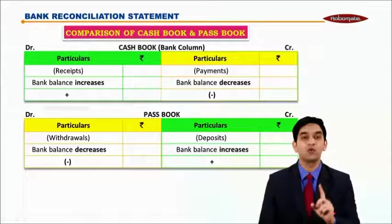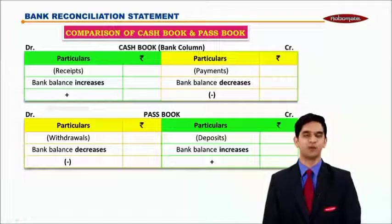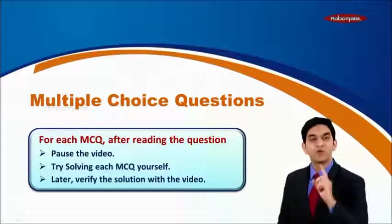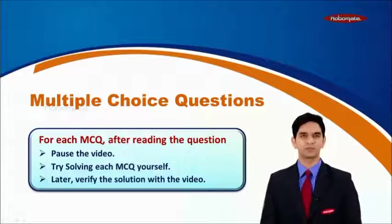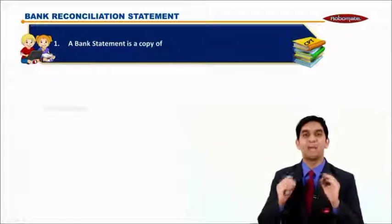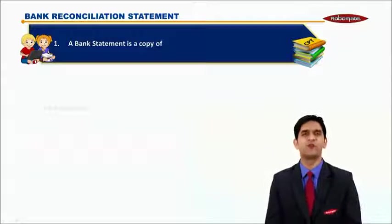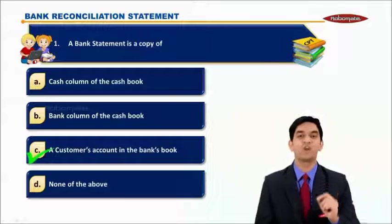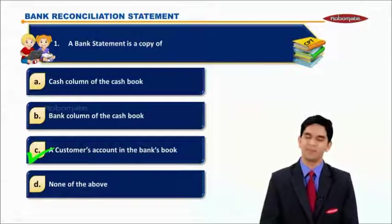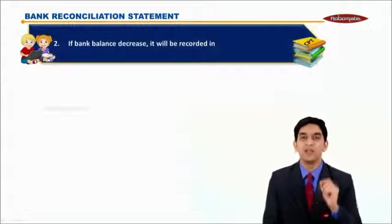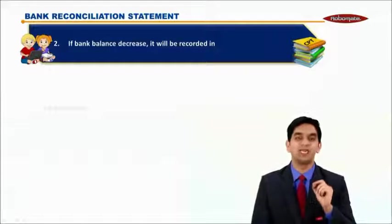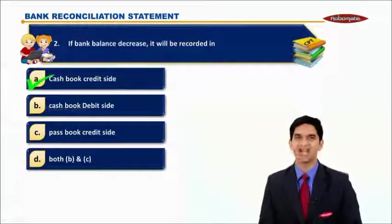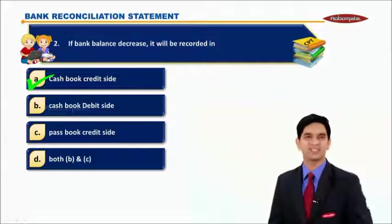This is our module. We have to attempt MCQs on this module. Please pause your video and read out these instructions. Let us go for the first MCQ: 'A bank statement is a copy of...' The correct alternative is: a bank statement is a copy of the customer's account in the bank book. Second MCQ: 'If bank balance decreases, it will be recorded in...' The correct answer is: it will be recorded in cashbook credit side.